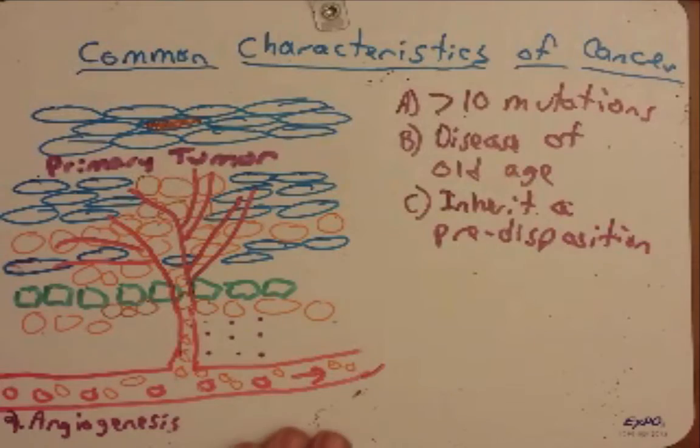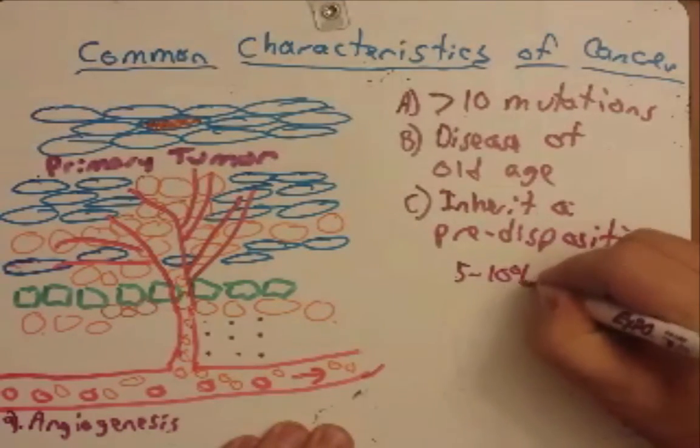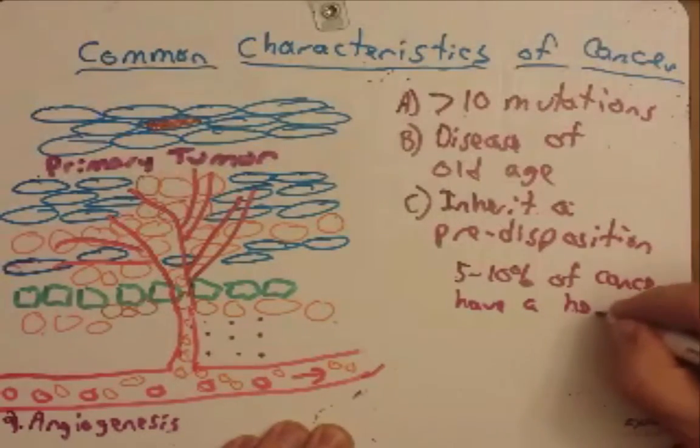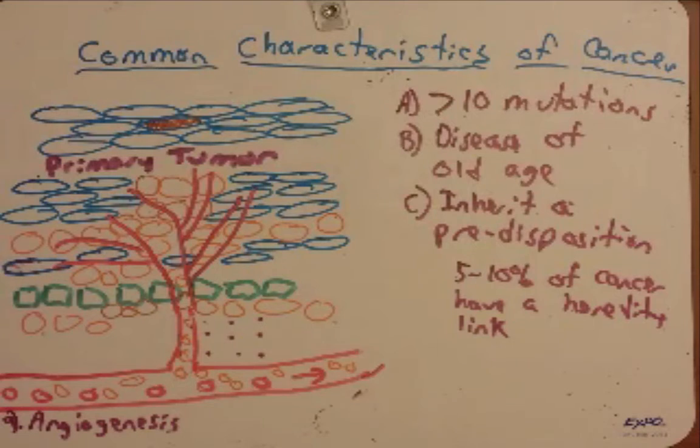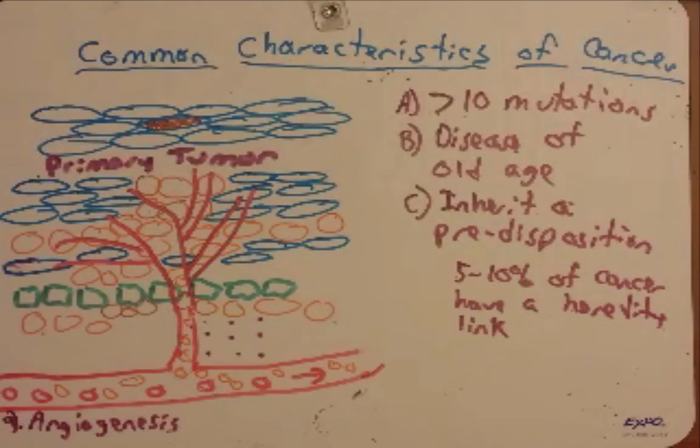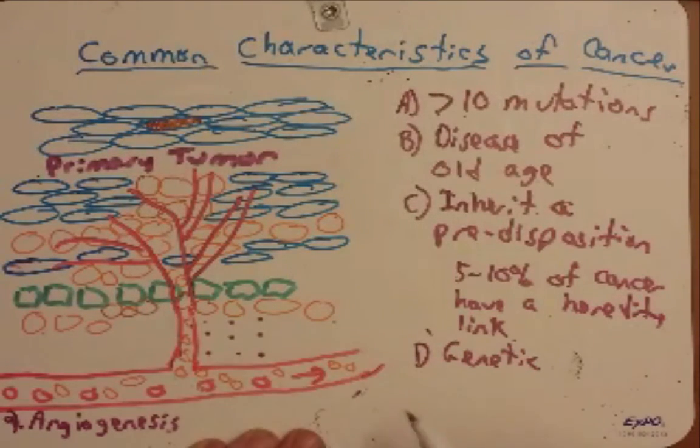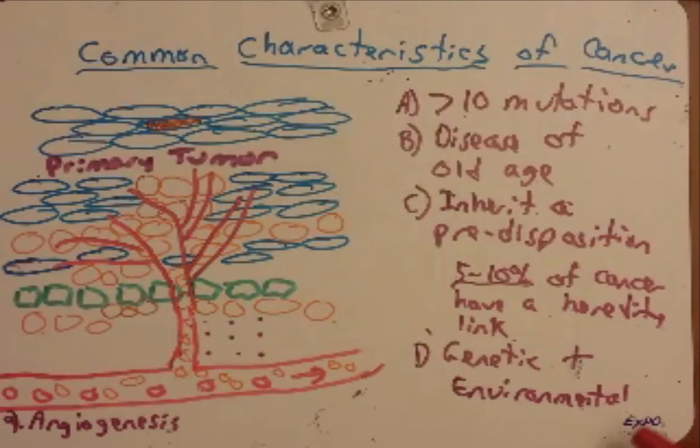Cancer by itself is not an inheritable disease in the sense that you're not going to inherit one mutation and all of a sudden have cancer. That's shown to be true by the fact that only about 5 to 10% of cancers have a heredity link. Of the people who inherit one of these mutations, they have a greatly increased chance of getting cancer. But still, only less than 10% of them have inherited a mutation. So not only is there a genetic component to cancer, but there has to be a large environmental component to help stimulate some of these mutations.